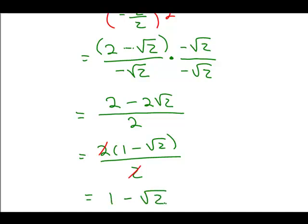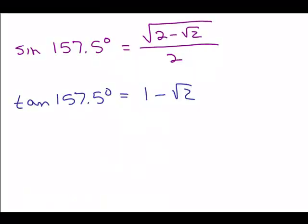Now remember that we said the tangent of 157.5 degrees should come out negative. Well, square root of 2 is approximately 1.4, so this is a negative number. So this is the exact value for 157.5, which is 1 minus square root of 2. And so here are our two answers. These are the exact values.